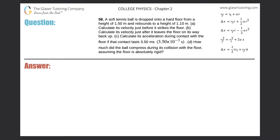Problem 58: A soft tennis ball is dropped onto a hard floor from a height of 1.5 meters and rebounds to a height of 1.10 meters. Part A: calculate its velocity just before it strikes the floor. This problem is very similar to number 56, so check out that video for additional practice. Since the ball is being dropped, the initial velocity is zero meters per second.